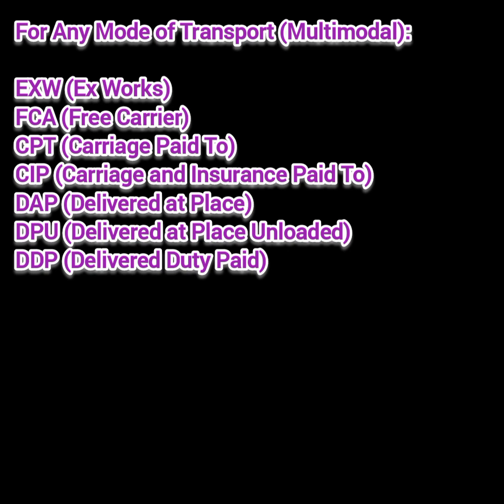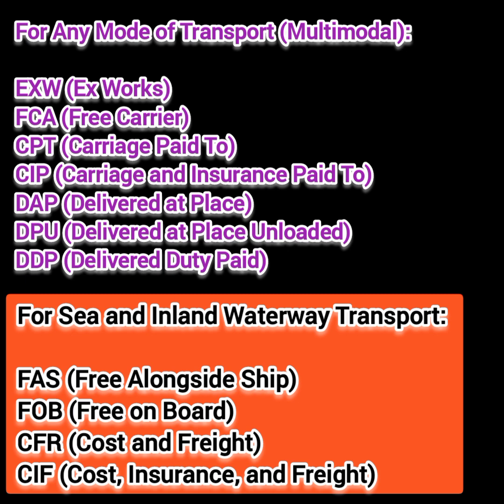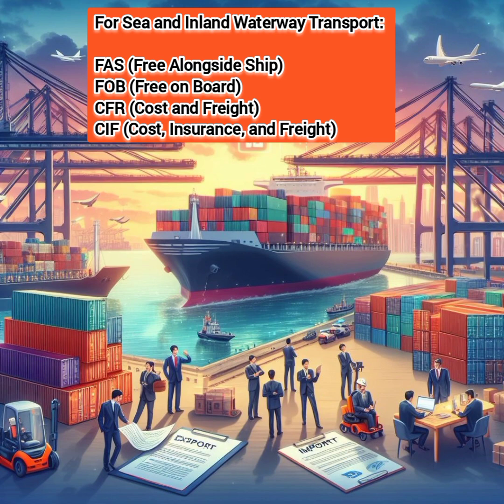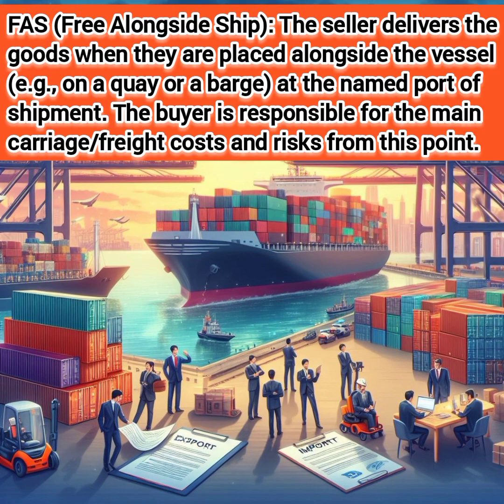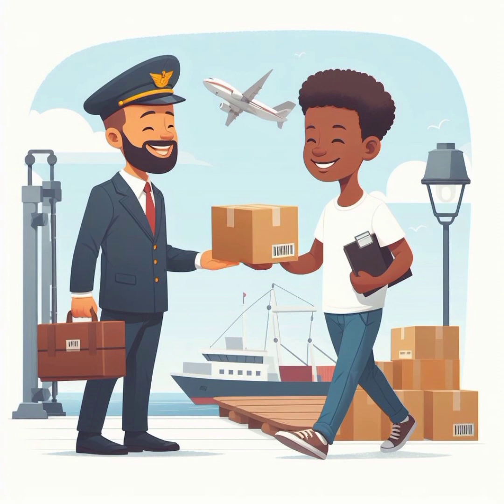The last DDP clause is almost like delivering to the person's doorstep — all he has to do is remove it from the delivery vehicle. So those seven clauses cover multimodal transportation. Now moving to the last four Incoterms, which cover transportation by sea and inland waterway. The first is FAS — Free Alongside Ship — where the seller is free after delivering the goods alongside the vessel at a named port of shipment.